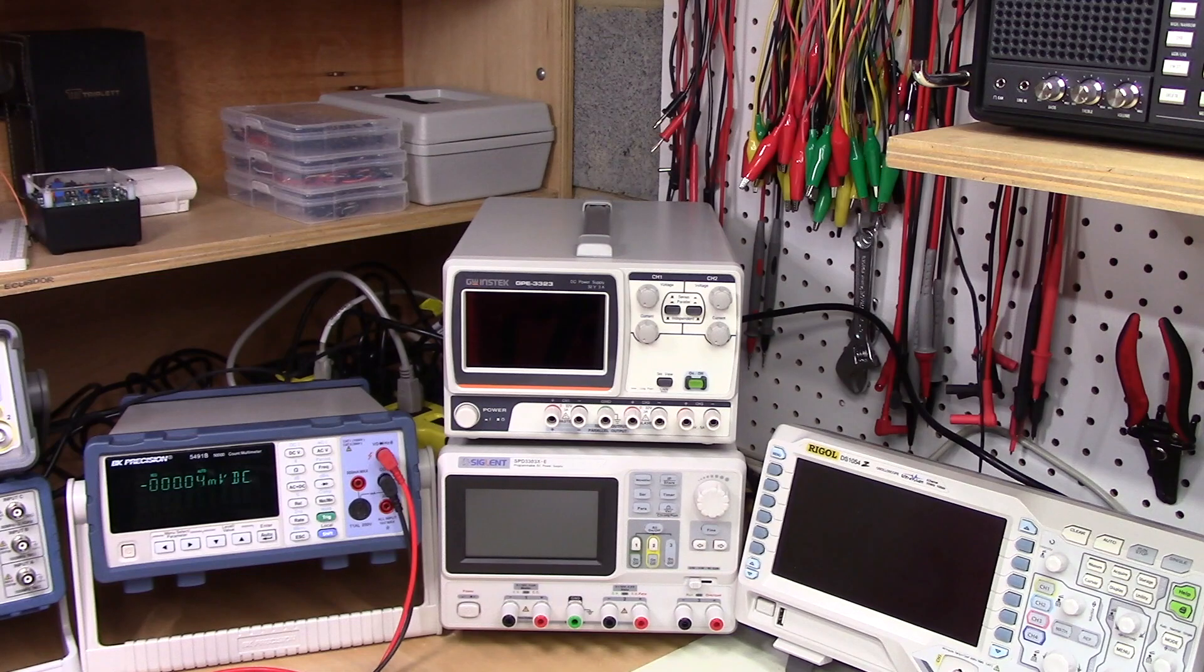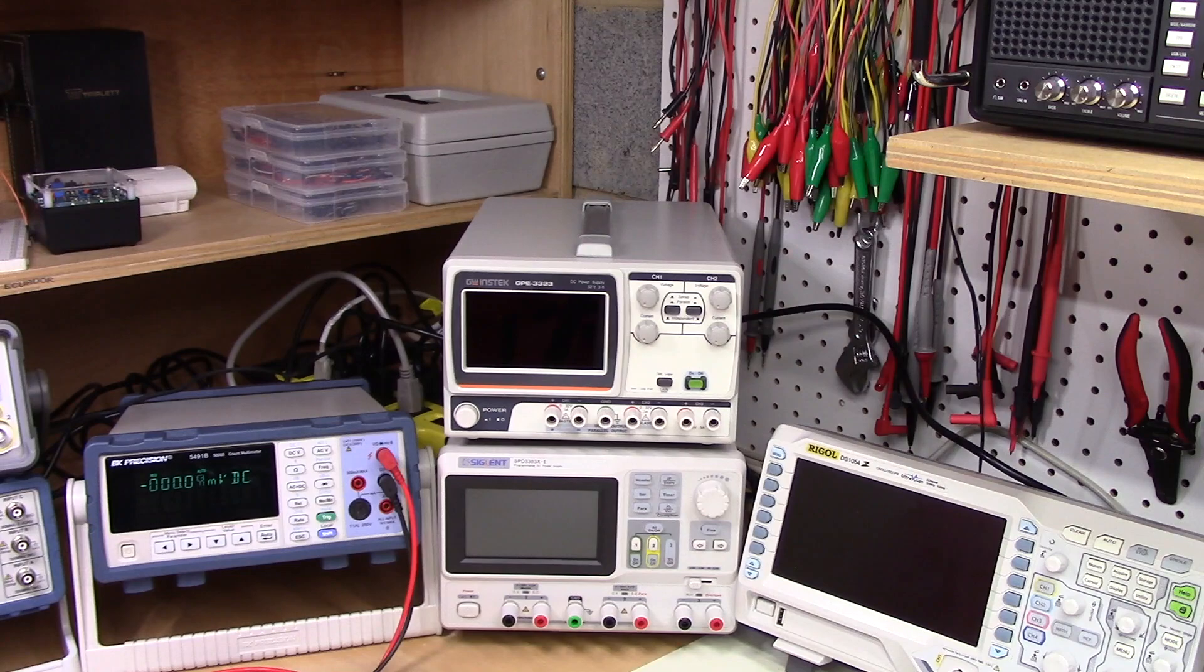The GW INSTEC GPE3323 is a three channel linear DC power supply with two adjustable channels providing 0 to 32 volts DC at up to 3 amps with constant current and constant voltage settings. The third channel is a fixed 5 volt DC output that provides up to 5 amps.